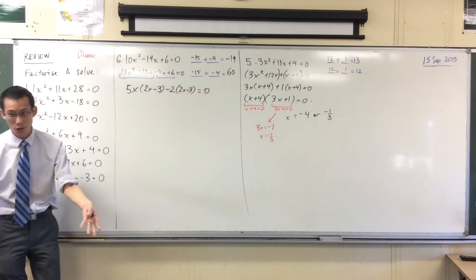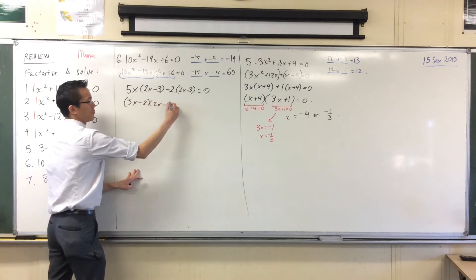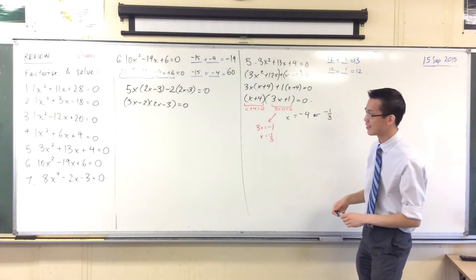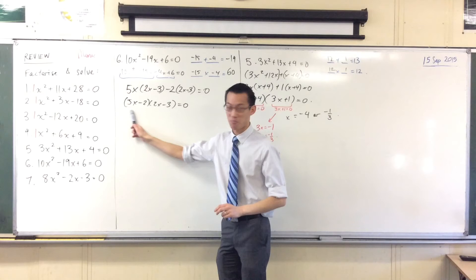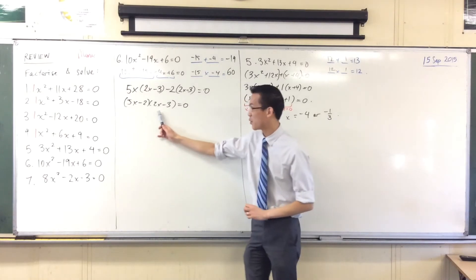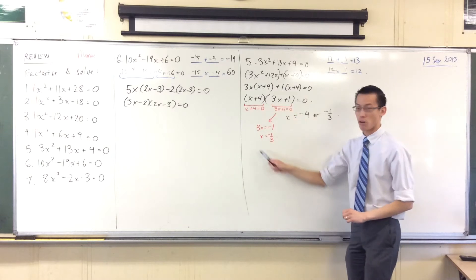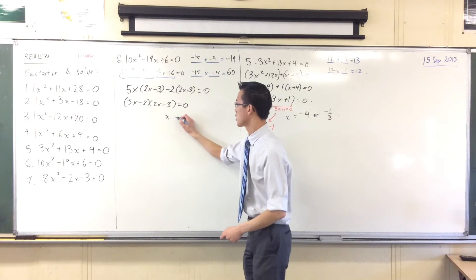So that equals 0. Now I've got my 2 pairs, and I can finish off my factorization. What do I do from here, now that I actually am factored? I want to find the number that's going to make that 0, and I want to find the number that makes that 0. If you like, you can go through this whole process and write the equations out, but you'll start to get familiar enough with these.